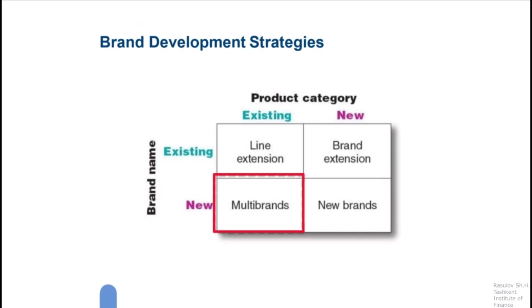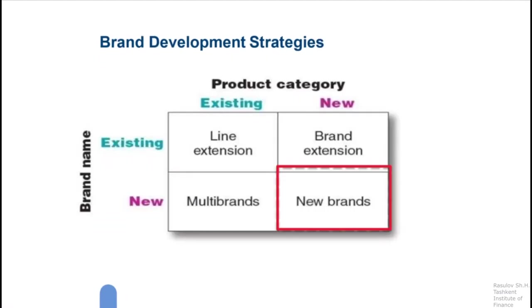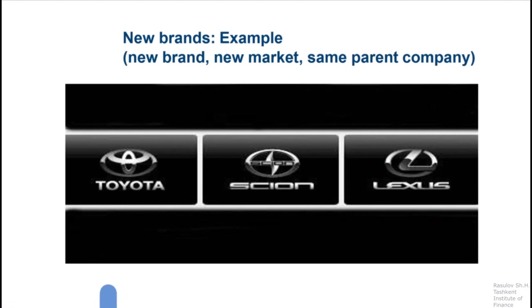Brand development strategy: multi-brand type. Companies often market many different brands in a given product category — for example, in the United States, Pepsi markets at least 8 brands of soft drinks. For new brands: a company might believe the power of its existing brand name is waning, so a new brand name is needed. For example, Toyota created a separate Lexus brand aimed at luxury car customers, and the Scion brand targeted toward millennial consumers.